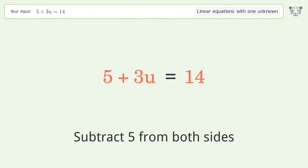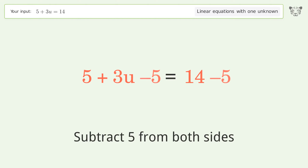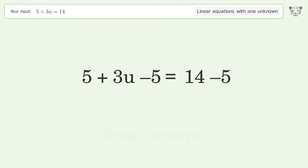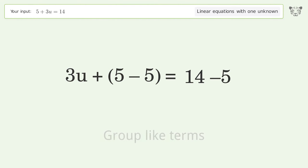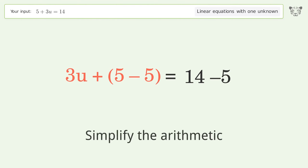Subtract 5 from both sides. Then group like terms and simplify the arithmetic.